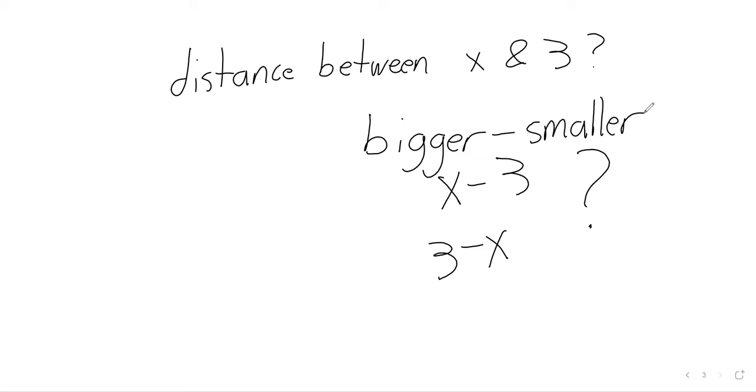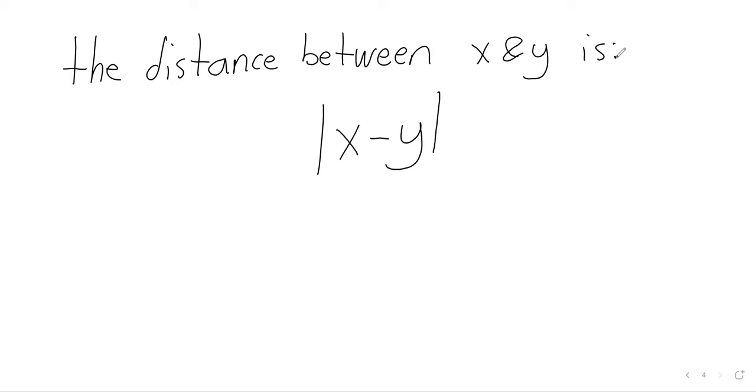Absolute values offer the solution to this. The distance on the number line is the absolute value of one of those numbers minus the other number. And absolute values are special because when you subtract inside an absolute value, order doesn't matter. Let me do that real quick.